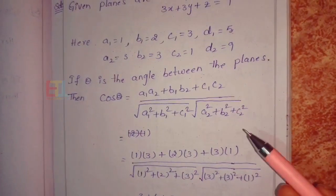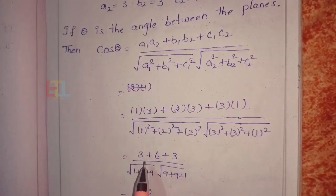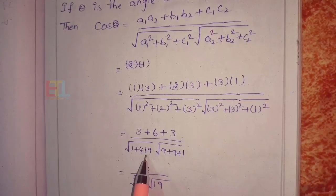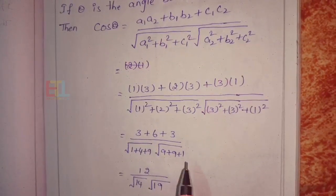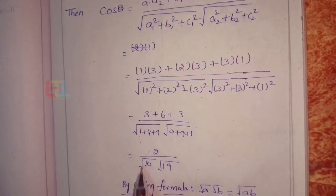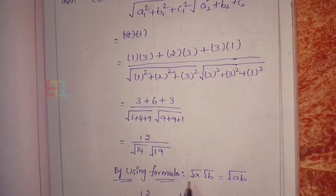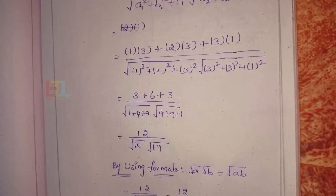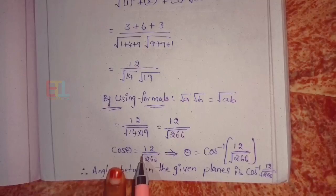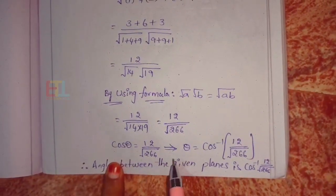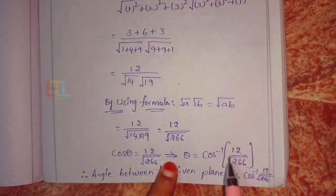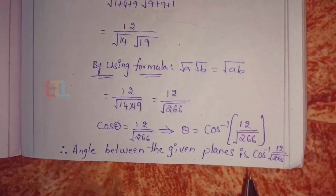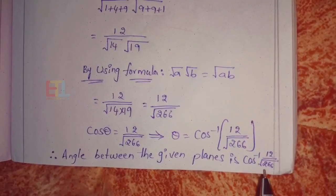Using the same common formula — second method — we substitute values and simplify. We get: (3 + 6 + 3) divided by (root of (1+4+9) times root of (9+9+1)) equals 12 divided by (root 14 times root 19) equals 12 divided by root 266. Therefore, the angle between the given planes is cos inverse of 12 by root 266.